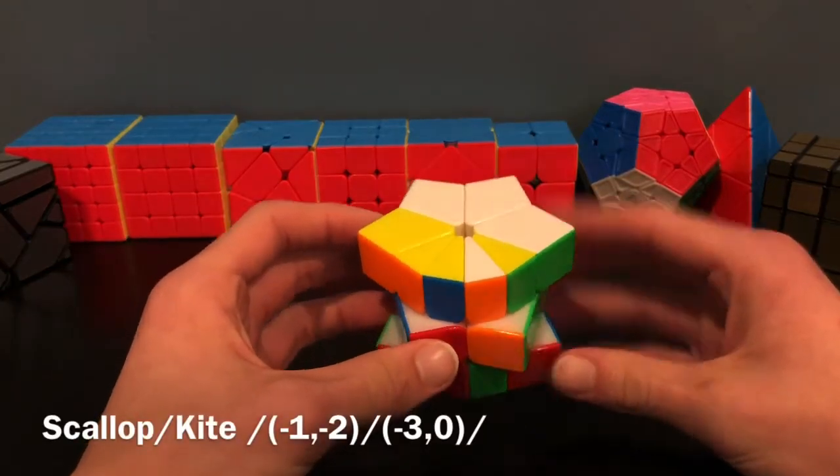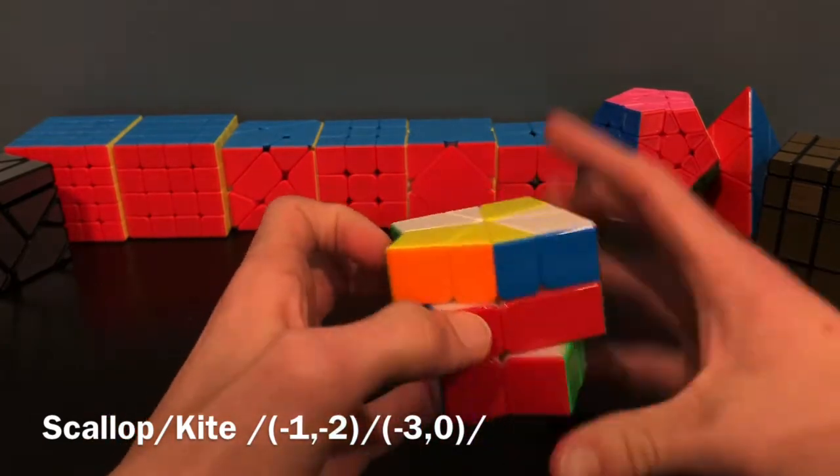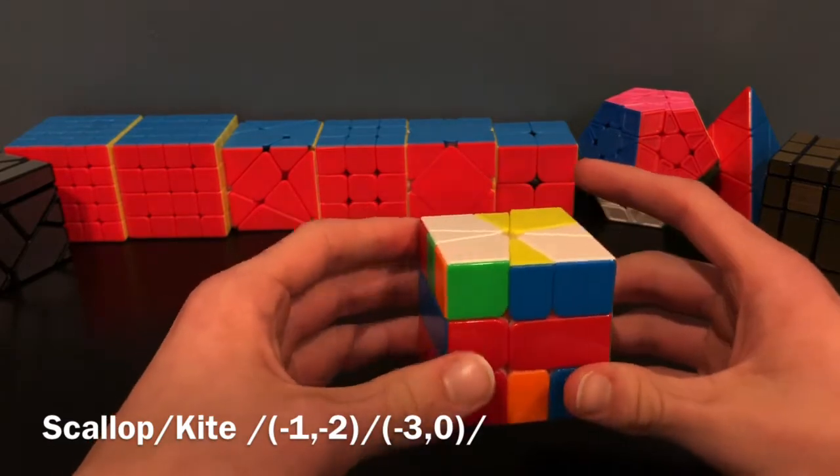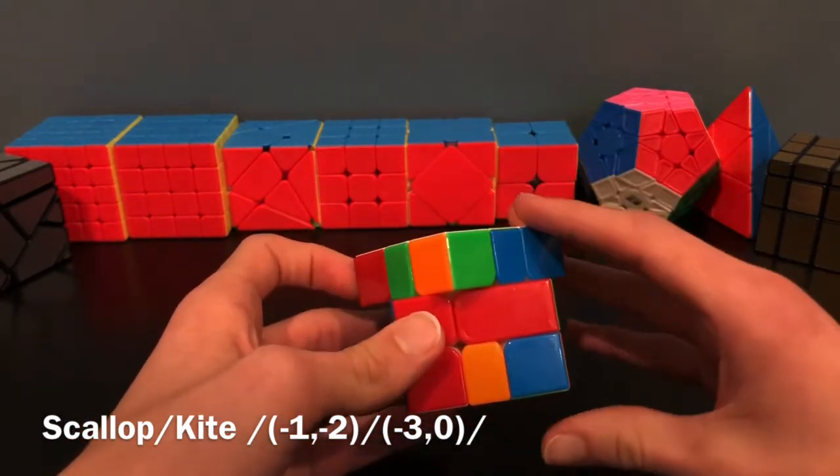So we've probably all seen this case, Scallop Kite. It's a simple three-move setup so that you can get it into the cube shape. A lot of people use this as their entire cube shape method. However...